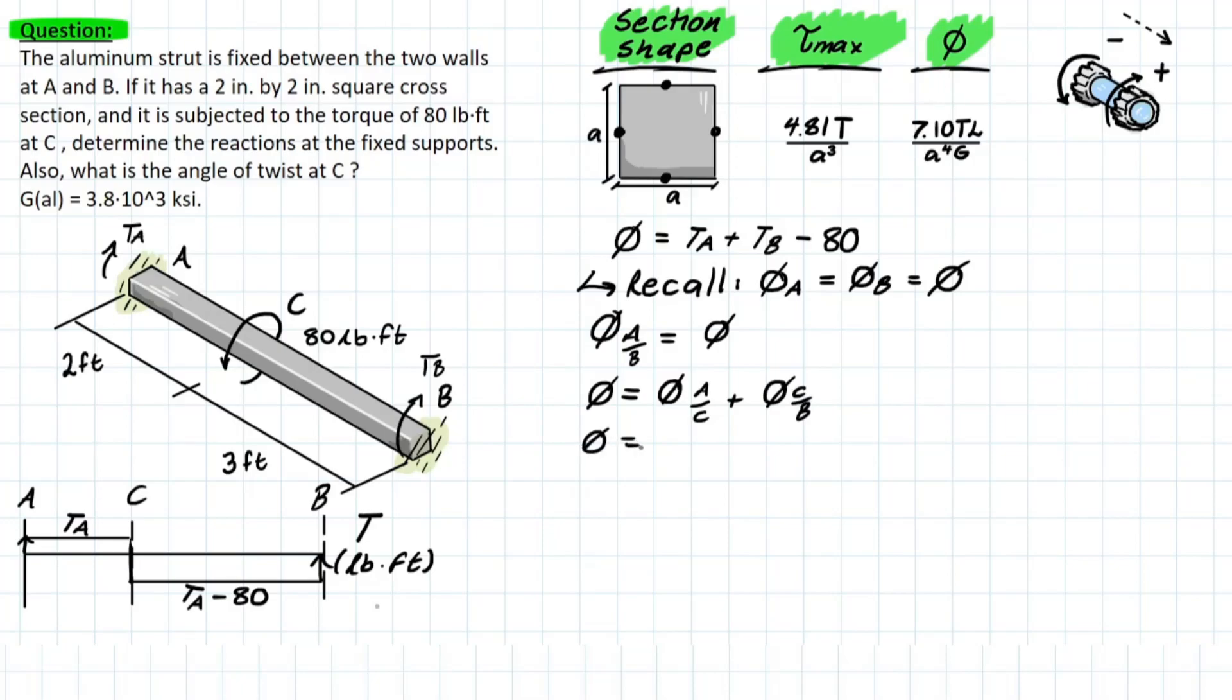So first things first, we're going to start with AC. So we have 7.1. We're going to have the torque TA times the length, which is 2 feet. And we have a to the fourth, which is simply the dimension of the cross section, times G, which is our shearing modulus given in the problem. And we're going to be adding the effect of CB as well, which is also 7.1. But the torque is slightly different now because we have TA minus 80 along that length of 3 feet. And a to the fourth G on the bottom.